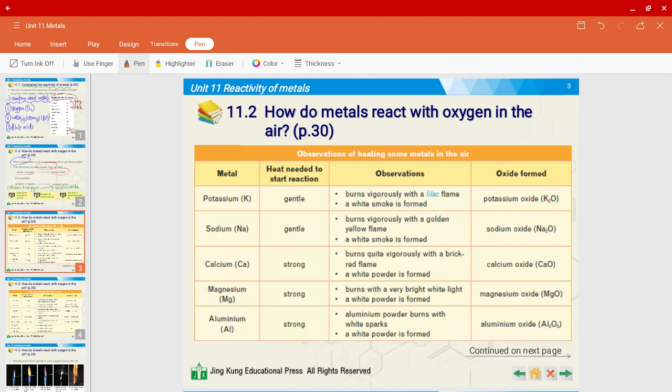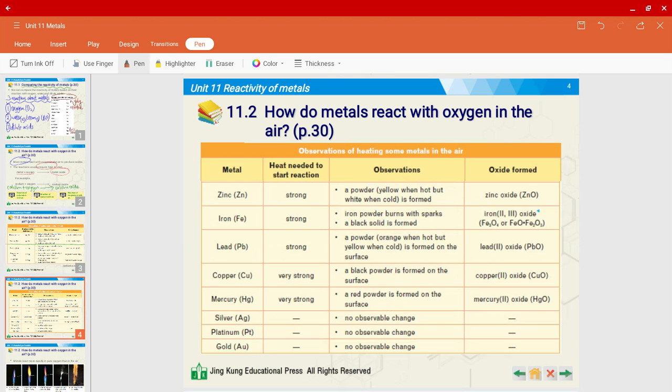Now let's move on to the table. For this particular table I want you to divide it into three groups. The first group, only potassium and sodium. You can just draw a line and afterwards you have calcium all the way until mercury. Draw another line and then silver, platinum and gold are the third group.